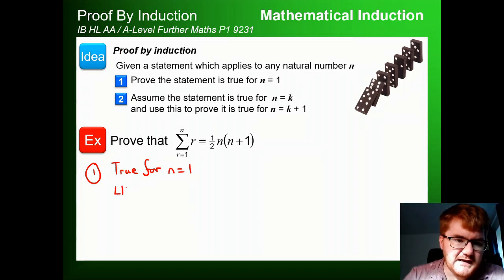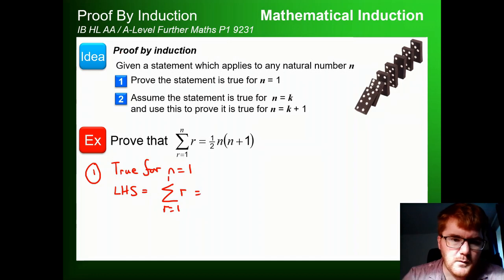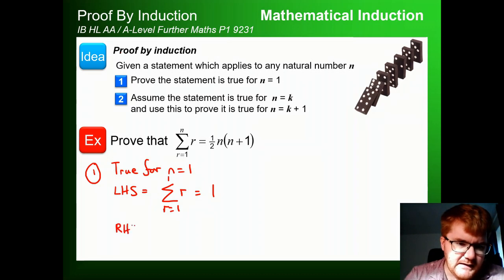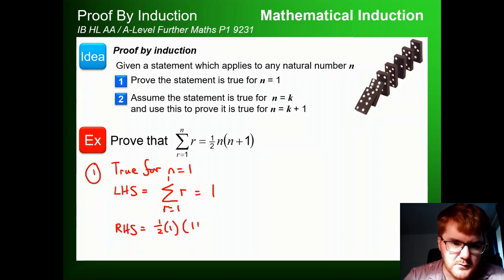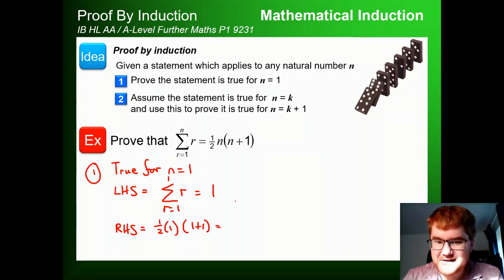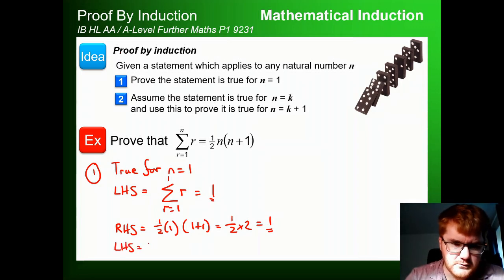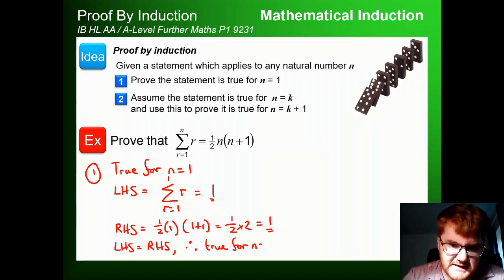For n=1, the left-hand side is the sum from r=1 to 1 of r, which is just 1. The right-hand side: substituting n=1 gives ½ × 1 × (1+1) = ½ × 2 = 1. The left-hand side equals the right-hand side, so therefore it is true for n=1.